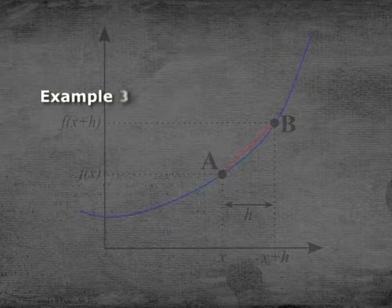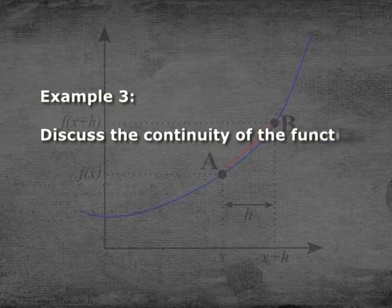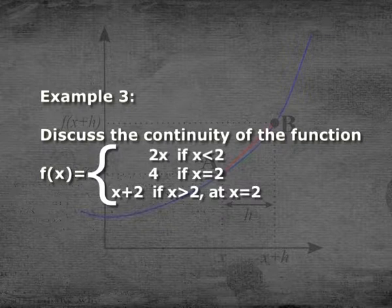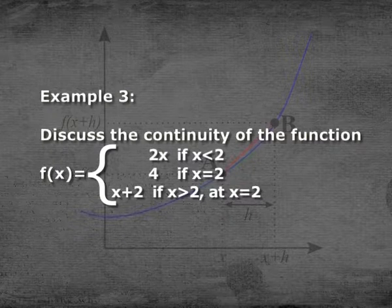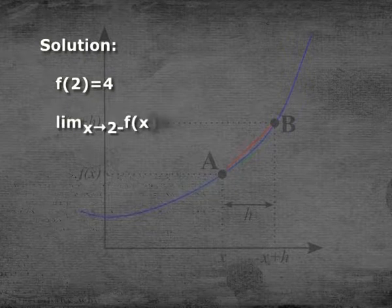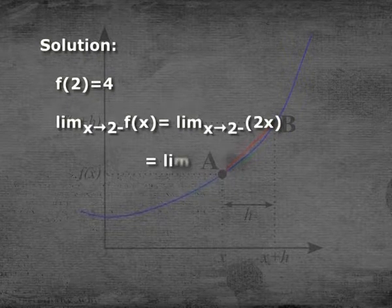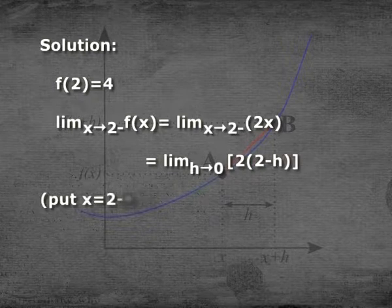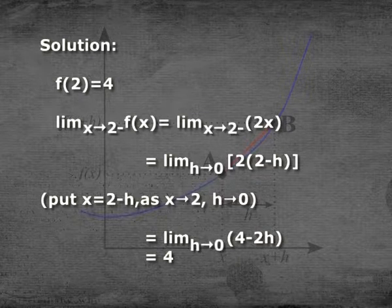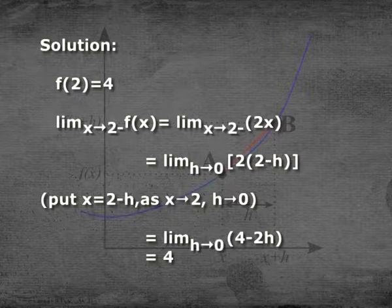Example 3: Discuss the continuity of the function where f(x) = 2x if x < 2, f(x) = 4 if x = 2, and f(x) = x + 2 if x > 2, at x = 2. Solution: f(2) = 4. The left-hand limit: limit x→2⁻ of f(x) = limit h→0 of 2(2 − h) = limit h→0 of (4 − 2h) = 4.